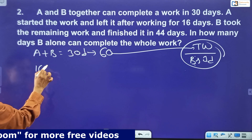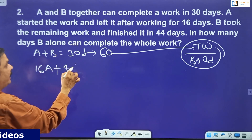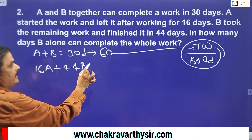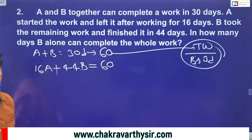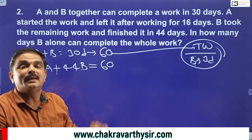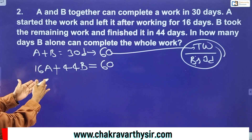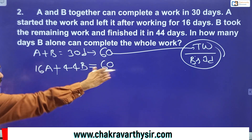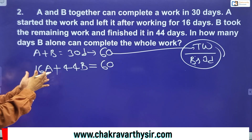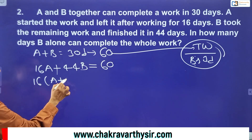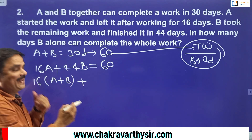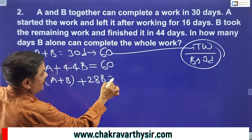Clearly they've given that A worked for 16 days, so: 16 days work of A plus 44 days work of B equals total work. Let me bifurcate: 16 days work of A and B, plus 28 days work of B equals total work. I've split the 44 into 16 and 28, using A and B together for the first 16 days.